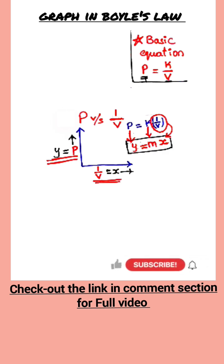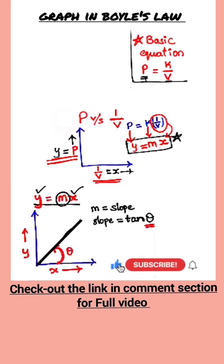Y is equals to MX, right? The nature of the curve for this equation Y is equals to MX is going to be a straight line which is passing through an origin. A straight line which is passing through an origin.